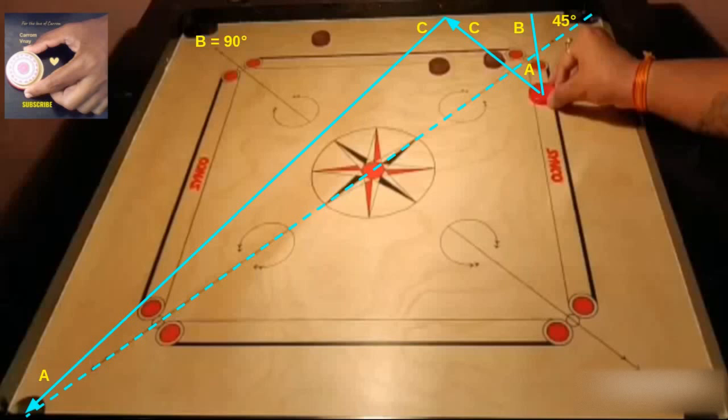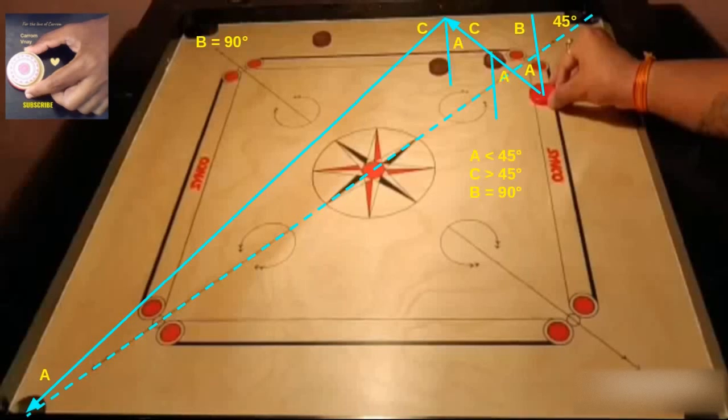In other words, ABC are similar triangles. As we go further, you will see that the point of contact on the coin with respect to the horizontal axis too is equal to A. A which will be less than 45 degrees for any third pocket shot and C which will be more than 45 degrees.